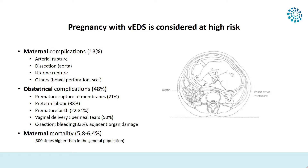When vascular EDS patients deliver vaginally, high-grade perineal tears have been reported. For patients delivering by C-section, the most common adverse events are severe bleeding and adjacent organ damage, like the bladder or colon. Maternal mortality is a big preoccupation — reported at 25% in the late 1990s, but that was a biased number. More realistic estimates published by Mitzi Murray in a large U.S. cohort show a mortality estimate of 5.8% to 6.4%, which is still 300 times higher than in the general population.